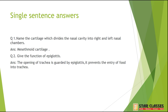Let's start with single sentence answers, which carry one mark each. Question 1: Name the cartilage which divides the nasal cavity into right and left nasal chambers. The cartilage of the nose is called mesethemoid cartilage. Pay attention to its spelling since it is a one-mark question — only one word to write, so the spelling must not be wrong.